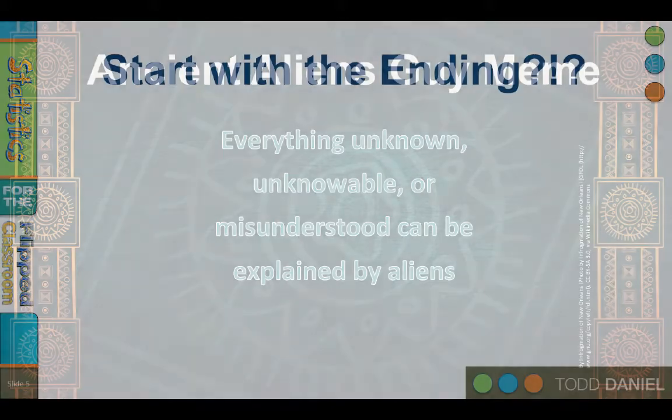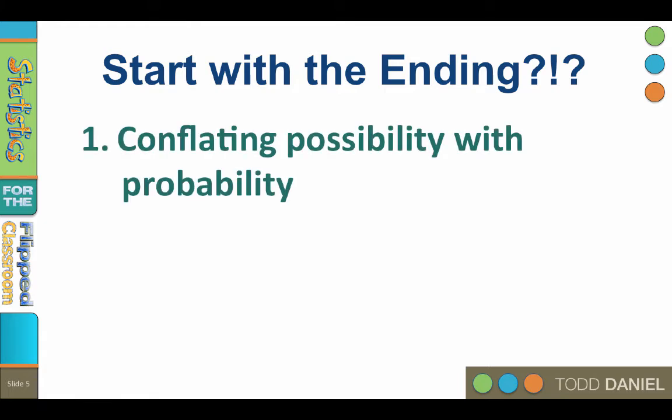Starting with an alternative hypothesis leads us astray in so many ways. The first is conflating possibility with probability. Can you prove that aliens didn't build the Egyptian pyramids or Stonehenge? If you can't prove it didn't happen, how can you say aliens didn't do it? Anything is possible. But the answer is, we're not trying to prove anything — we're looking for the most likely explanation with the fewest assumptions: the most parsimonious explanation.